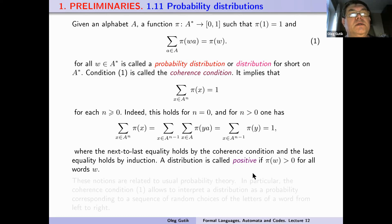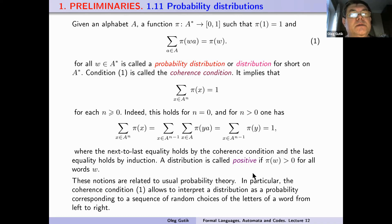The distribution is called positive if the image p(w) is positive for all words from the free monoid A-star. These notions are related to usual probability theory. In particular, the coherence condition allows us to interpret a distribution as a probability corresponding to a sequence of random choices of letters of the word from left to right.